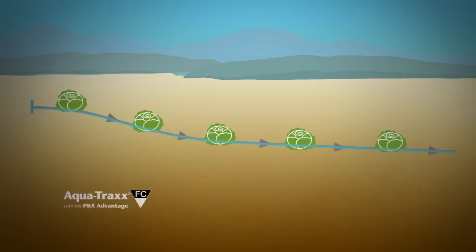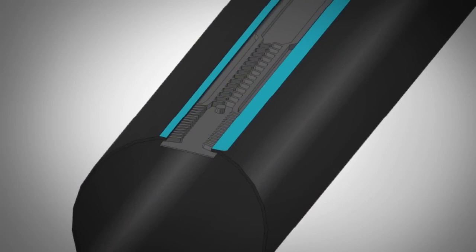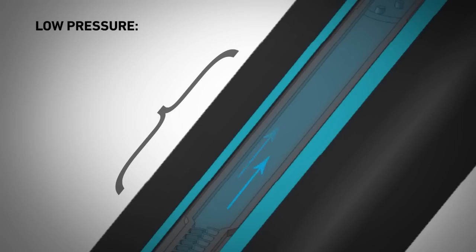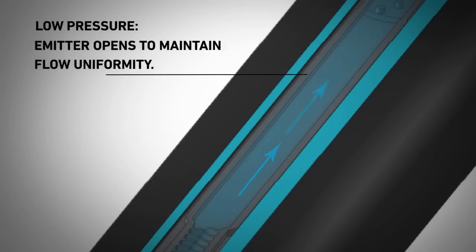In the same situation, AquaTrax FC applies water evenly regardless of elevation changes. The water flows through the tape passing through the PBX flow path, where it then encounters the pressure-responsive section. Where low pressure conditions occur, such as at the top of a hill or towards the end of a long tape run, the pressure responsive section of the emitter opens to maintain flow uniformity.